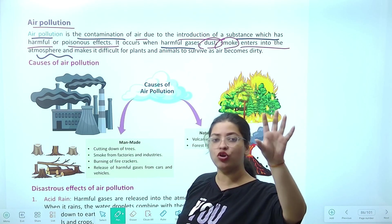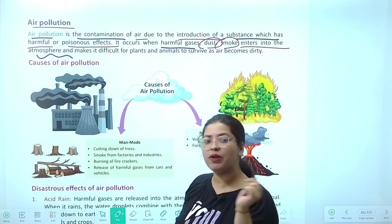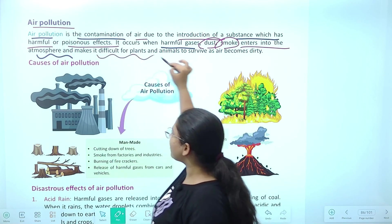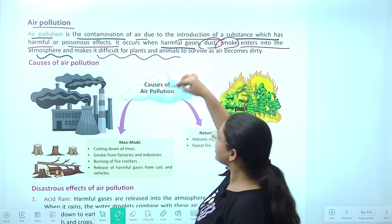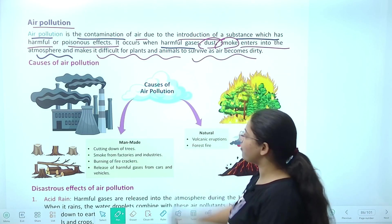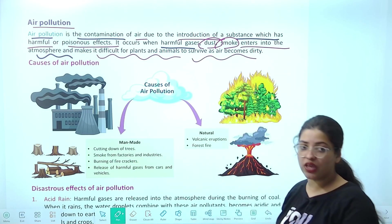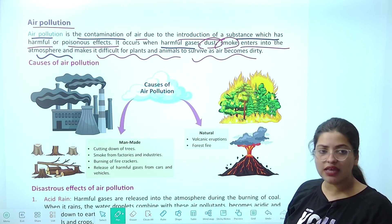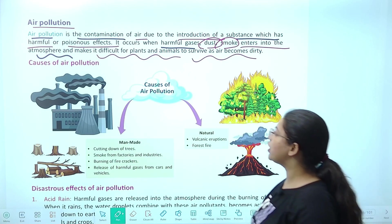Air mein jaati hain, air mein pollutant banke air pollution cause karti hain, jo kaafi difficult kar deti hai plants aur animals ke liye survive karna. Because hum jis air ko breathe kar rahe hain, wo ab kaisi hai — polluted hai.